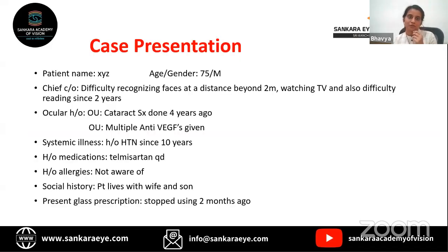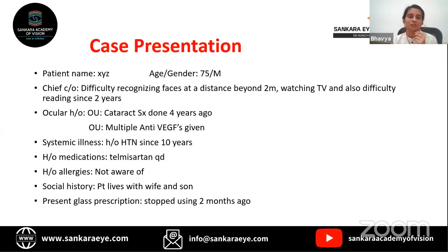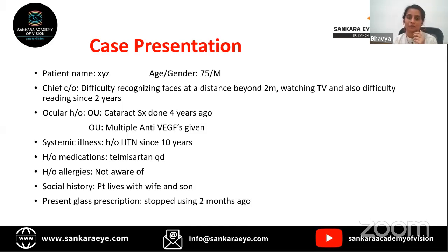A case presentation: a 75-year-old male presented with difficulty recognizing faces beyond two meters, difficulty watching TV, and difficulty reading since two years. Ocular history included cataract surgery in both eyes two years prior and multiple anti-VEGF injections. Systemically, the patient had hypertension for 10 years and was on medication. He lived with his wife and son, and had stopped using glasses two months ago as he noticed no difference in visual acuity with or without them.